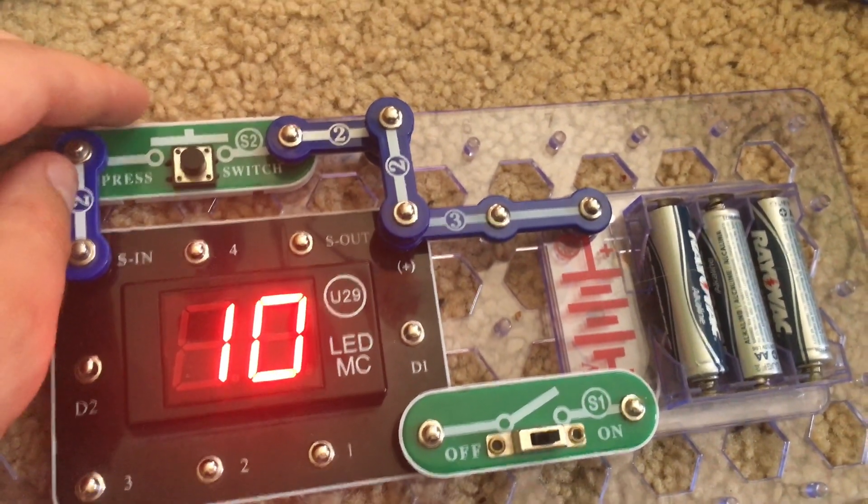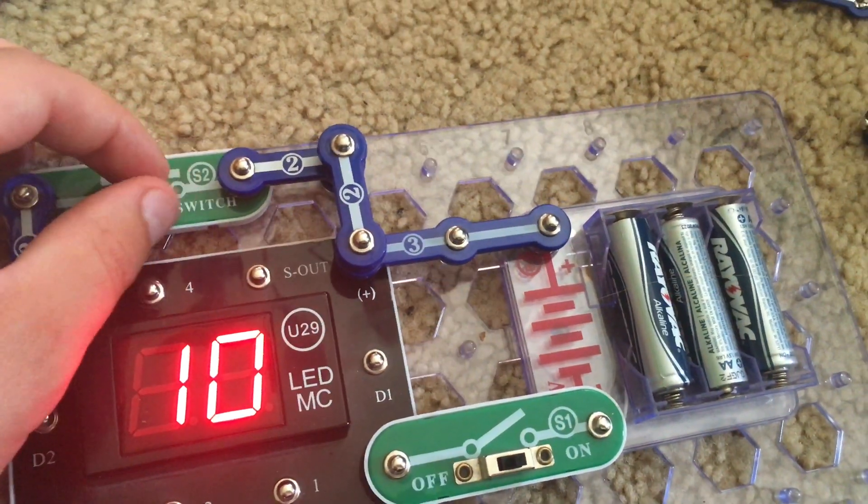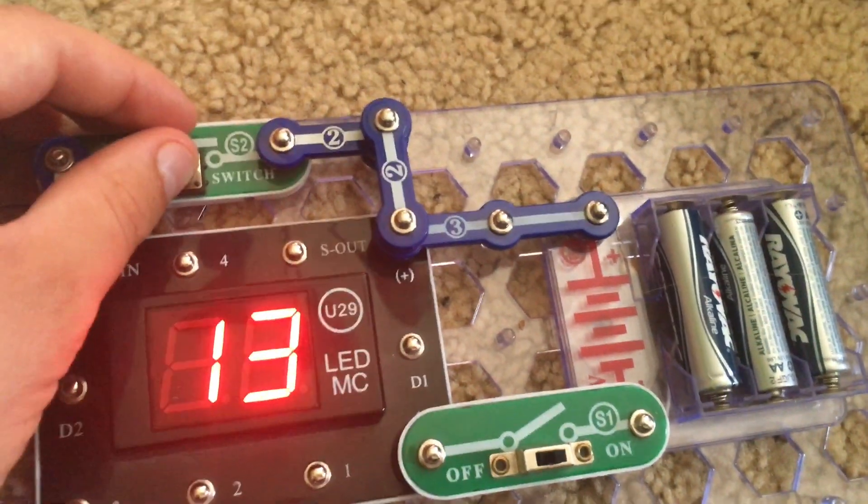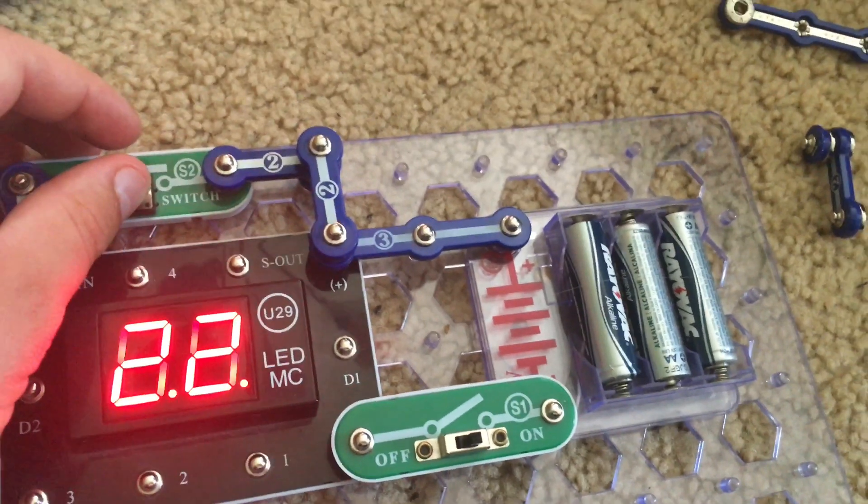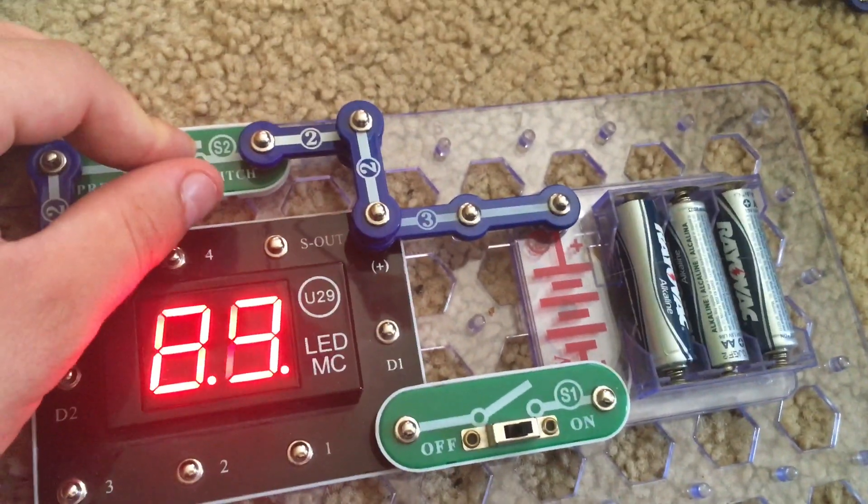Then after you push the S2 switch ten times, the tens digit display will change. And the U29 module goes all the way up to 99 before it resets to zero.